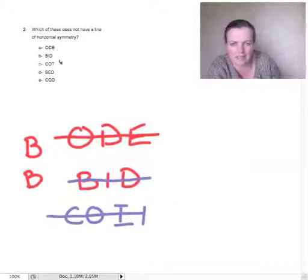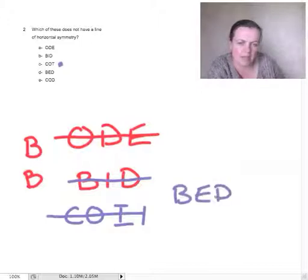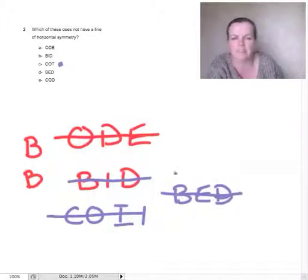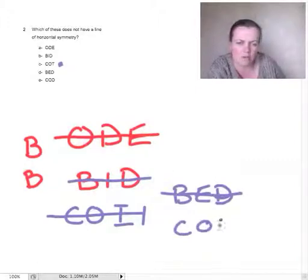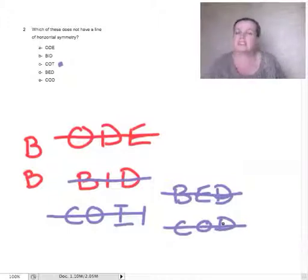Let's just check the others. BED - B, E, D - yes, if you fold it along there it would sort of fold up, down, and above, wouldn't it? And COD, yeah, that's got horizontal symmetry. So the one that does not have horizontal symmetry was COT.